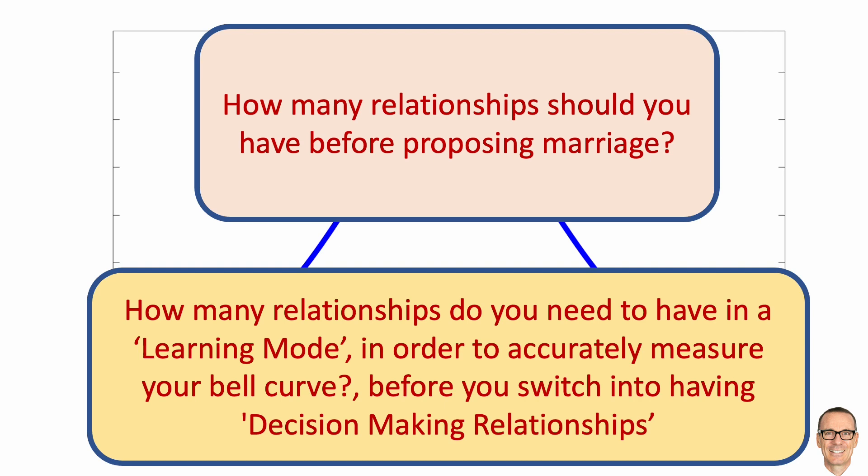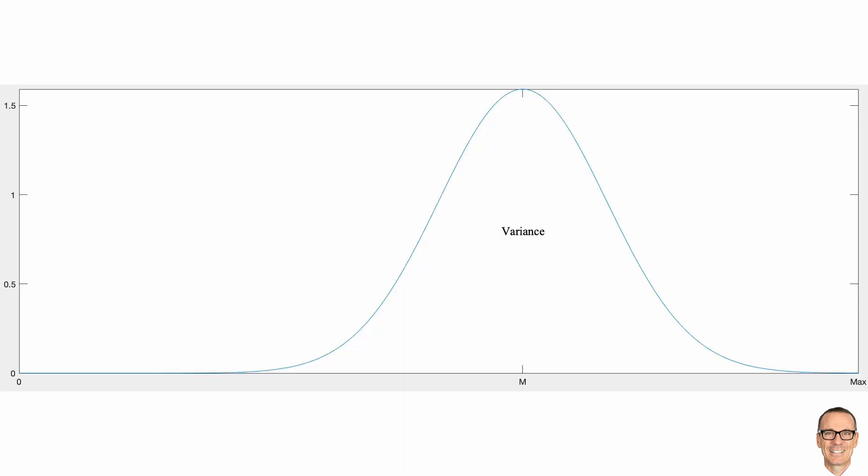Remember, you can't go back and decide on someone you've previously rejected. To keep things simple, let's assume you randomly select people to assess. For every person, you learn about their compatibility to you and it fills in the measured distribution.